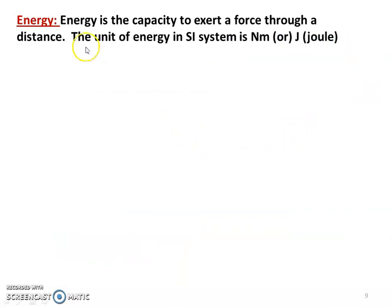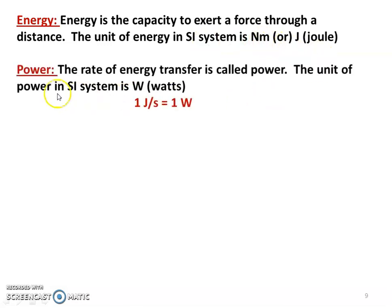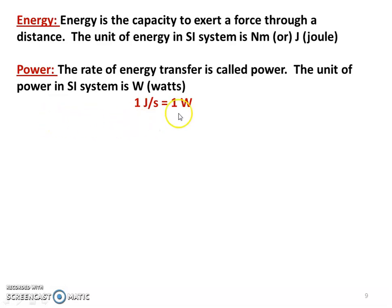Energy is the capacity to do work. The unit for energy is Newton meter or Joule. Power is the rate of energy transfer — the unit of power is 1 Joule per second, or 1 Watt. So energy is in Joules and rate of energy transfer is in Watts.